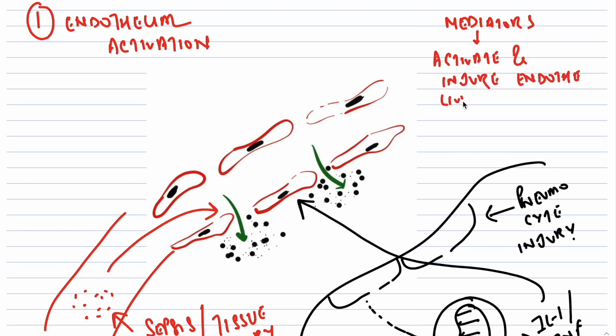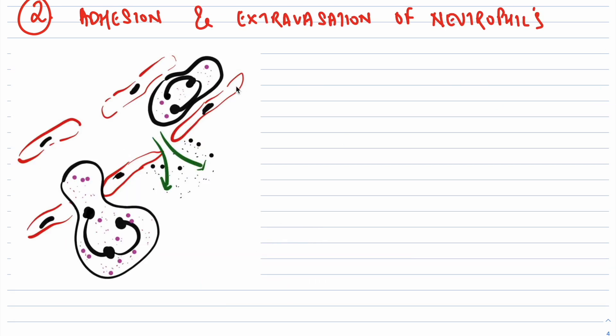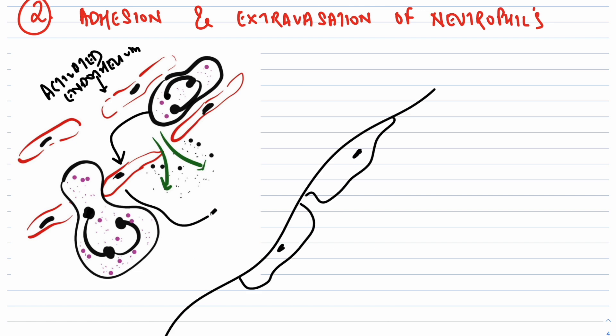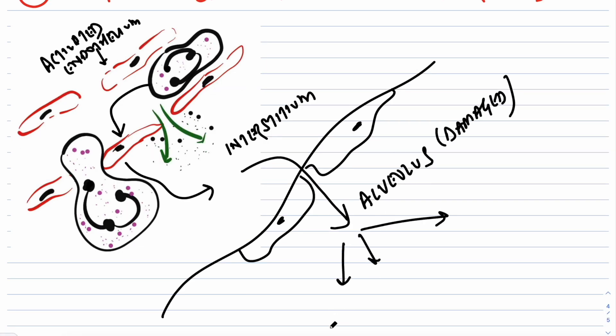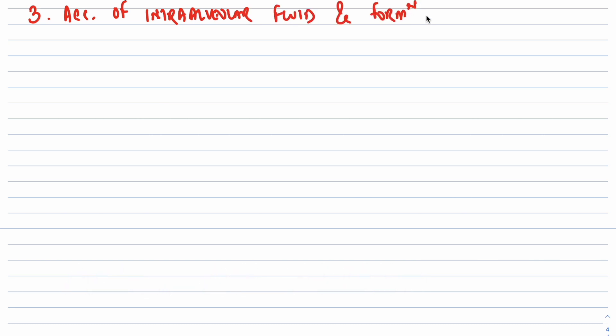These mediators injure the endothelial cells and activate them, increasing the expression of adhesion molecules. The second pathological event is adhesion and extravasation of neutrophils. Neutrophils adhere to the activated endothelium and migrate into the interstitium and the alveoli where they degranulate and release inflammatory mediators including proteases, reactive oxygen species, and cytokines, thus setting in motion a vicious cycle of inflammation and endothelial damage.